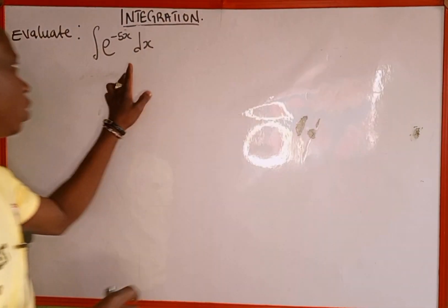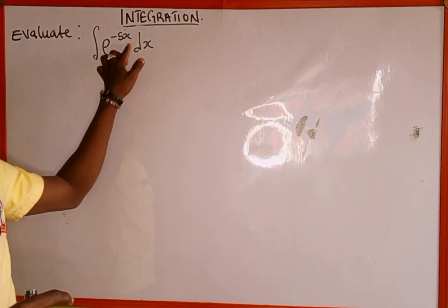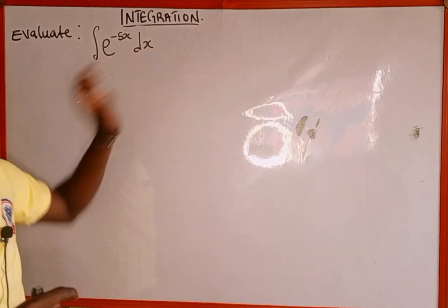The given function is e^(-5x), and we are asked to integrate this function with respect to x.